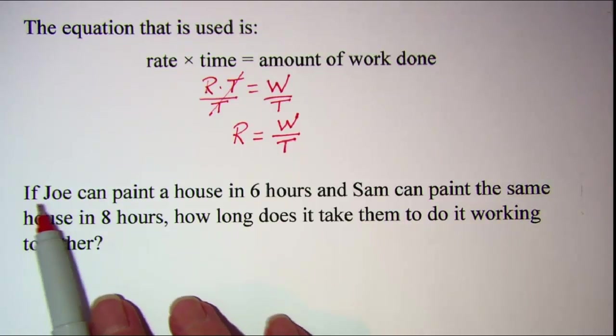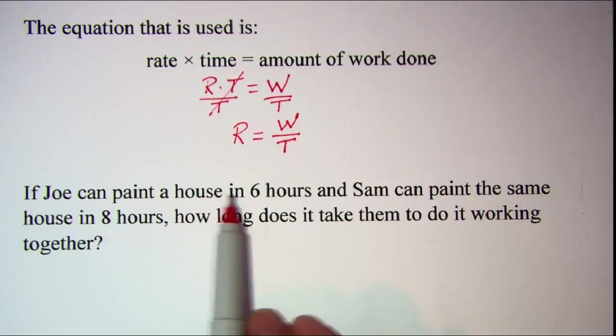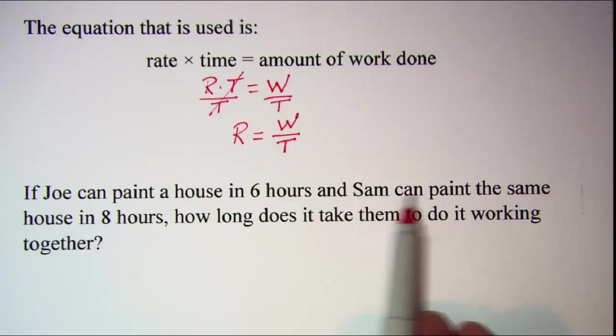The problem is: if Joe can paint a house in six hours and Sam can paint the same house in eight hours, how long does it take them to do it working together?